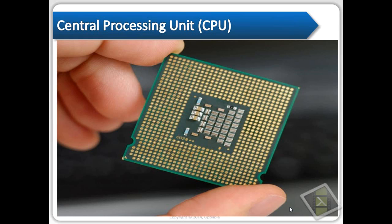Every device now has one of these — your phone, your tablet. The most common processors you're seeing now are Intel Pentium i3, i5, and i7. About five years ago, Mac switched from the PowerPC to the Intel chip set, and when they did that, they were able to run Windows on them. AMD makes another chip that's generally not considered as good. Intel is definitely the Cadillac of chip manufacturing.